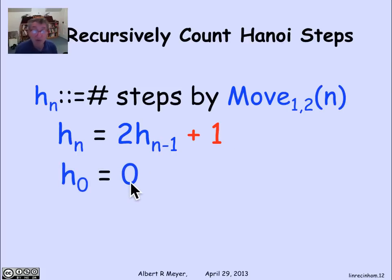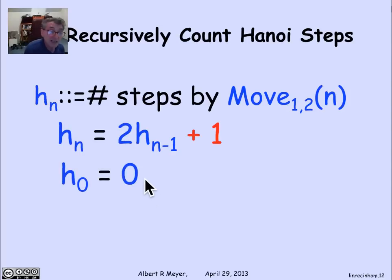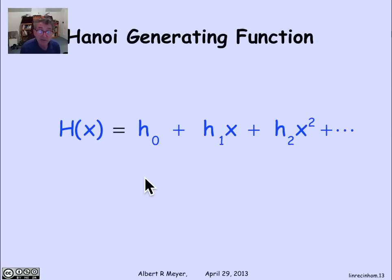By the way, h0 is 0. We need that initial condition for h to be determined uniquely. And the rationale here is that it doesn't take any moves to move no disks from one pole to another since you can't see what pole it's on anyway. You may as well think about it as being on your favorite pole with 0 disks. Let's look at this generating function, h of x, where the coefficient of x to the n is the number of steps it takes to move a stack of n disks. So it's h0 plus h1x, h2x squared, and so on.